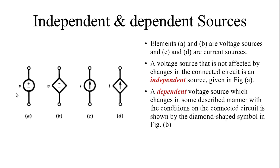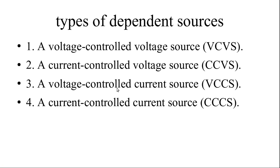Here I have given symbols for voltage and current sources. The circular voltage source is an independent source. The diamond-shaped source is a dependent source. These two are voltage sources and these two are current sources — one independent current source and one dependent. There are four types of dependent sources: voltage controlled voltage source, current controlled voltage source, voltage controlled current source, and current controlled current source.